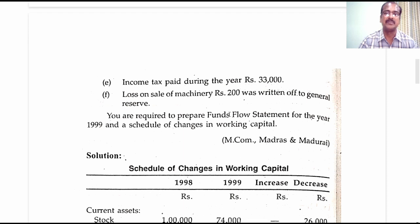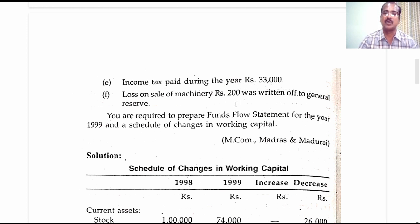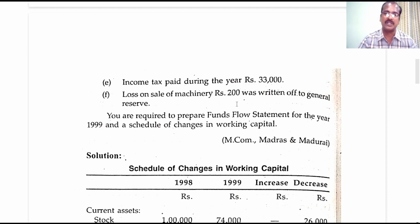The next additional information is income tax paid during the year: 33,000 rupees. Since we are going to prepare a separate ledger account for provision for taxation, it will be channelized through that account. Moreover, this item being a payment of tax could be assumed as an application of fund and recorded in the funds flow statement. Loss on sale of machinery amounting to 200 rupees was written off to general reserve — we will open a separate ledger account for general reserve and this item will be channelized through it.